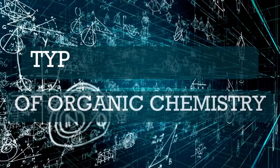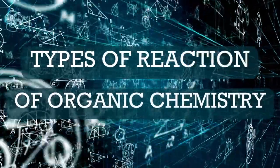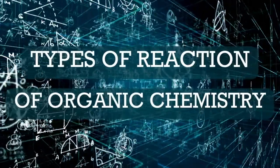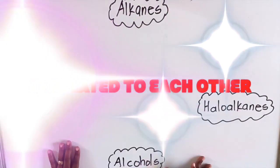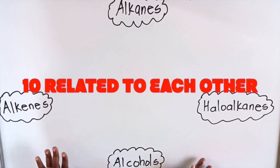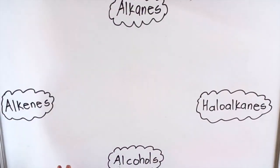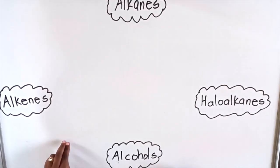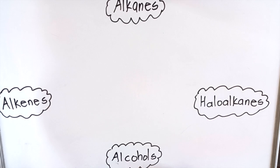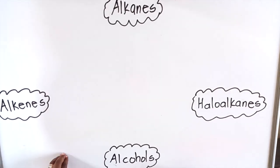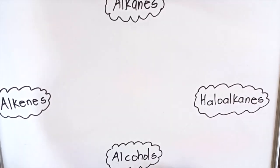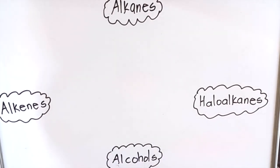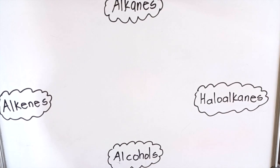Hello everyone. In this video, I'm going to do reactions of organic compounds. There are actually 12 different reactions but in this video, I'm only going to do 10. The two that I'm not going to do in this video are oxidation — also called combustion, when an alkane reacts with oxygen — and the other one is esterification, the formation of an ester. Those two will not be part of this video but all the other reactions of organic compounds will be included here.